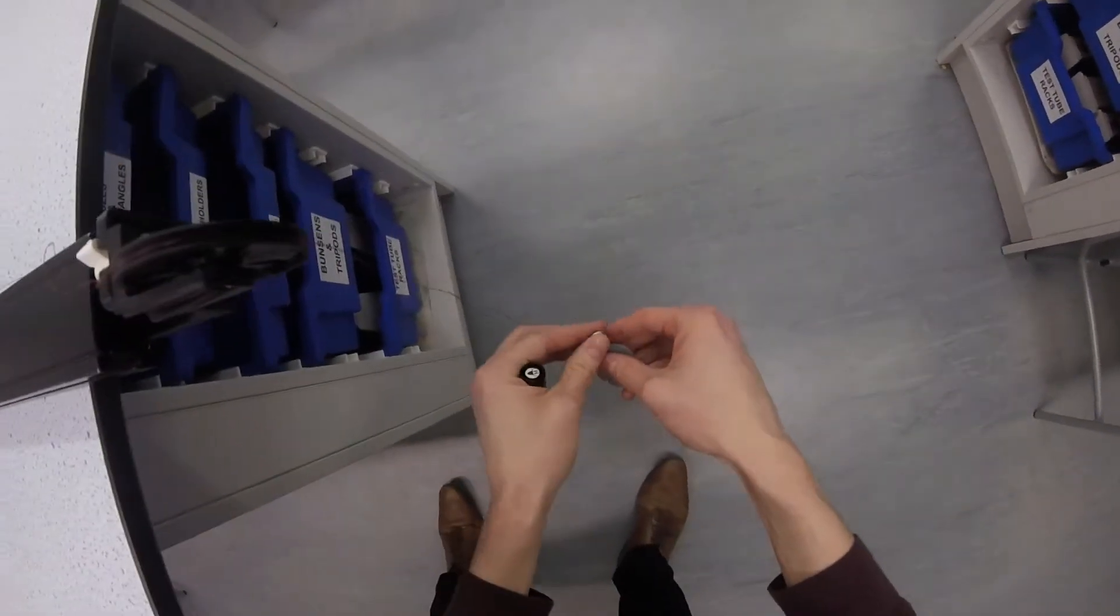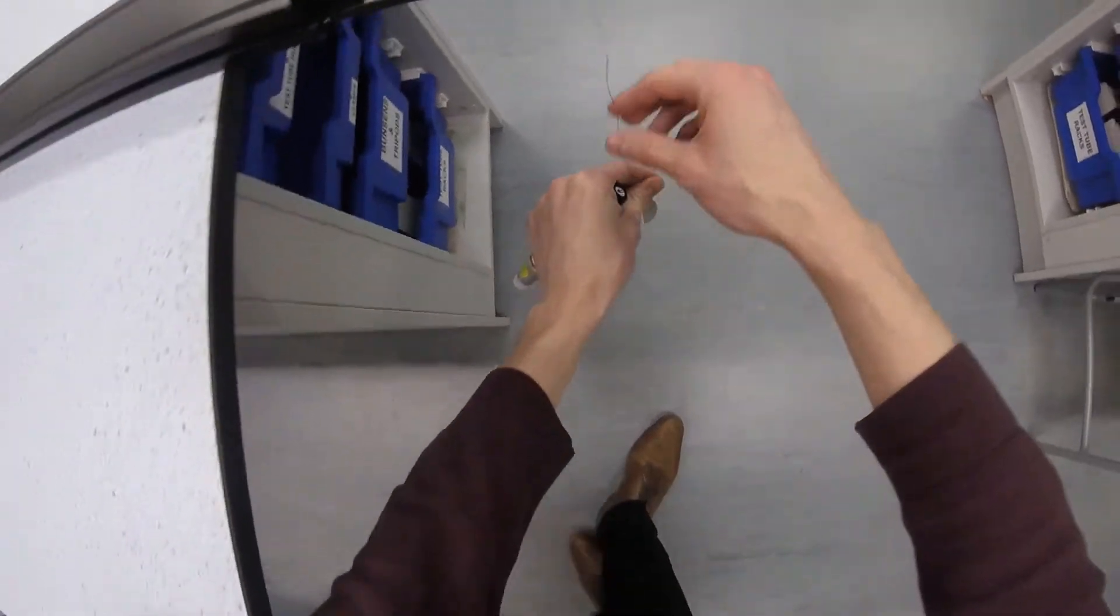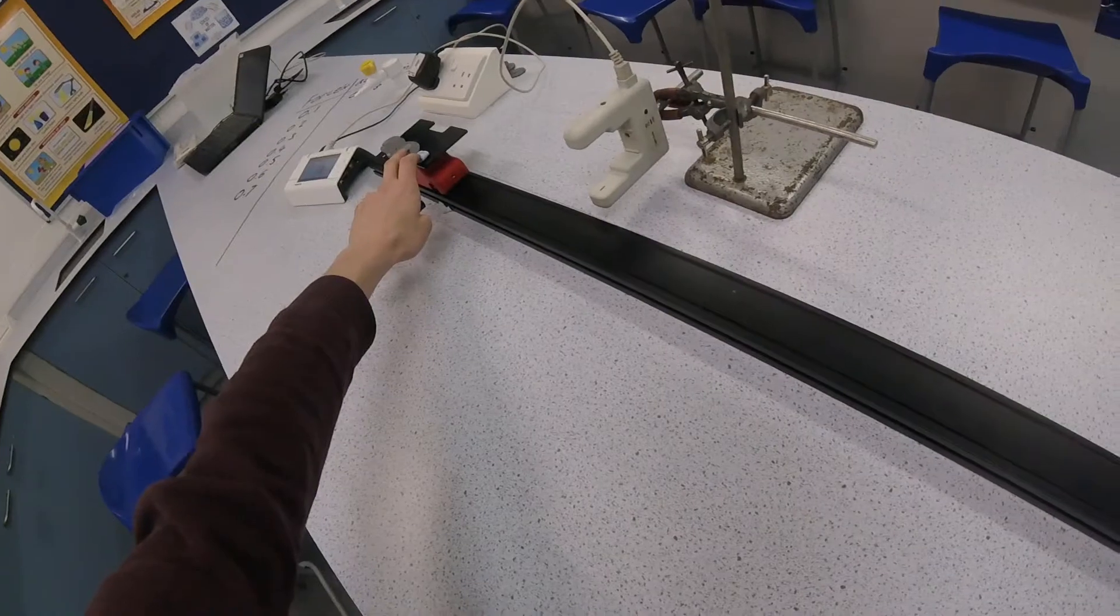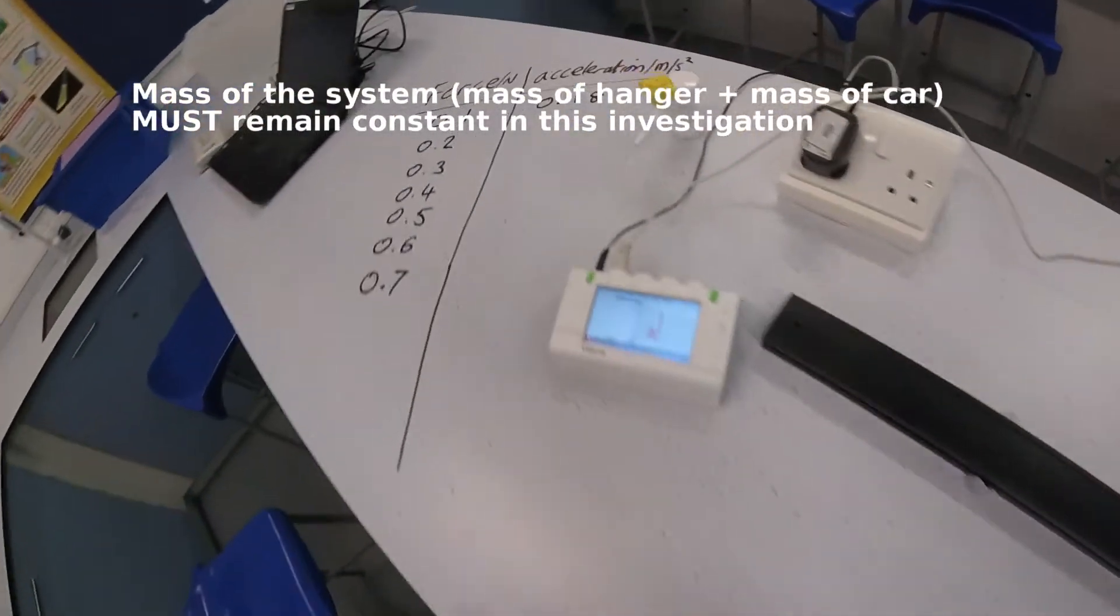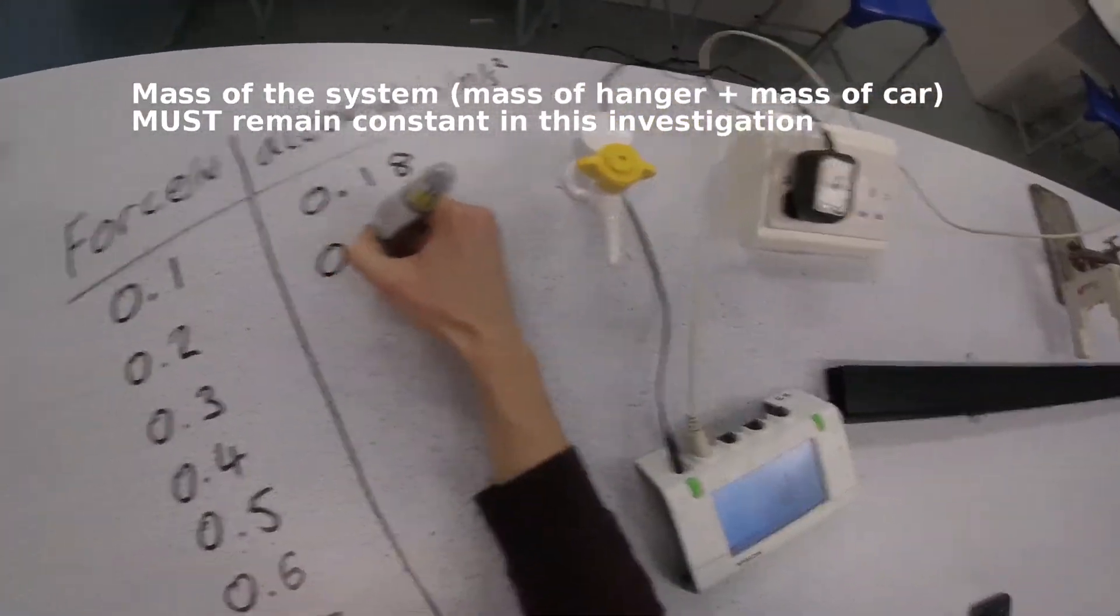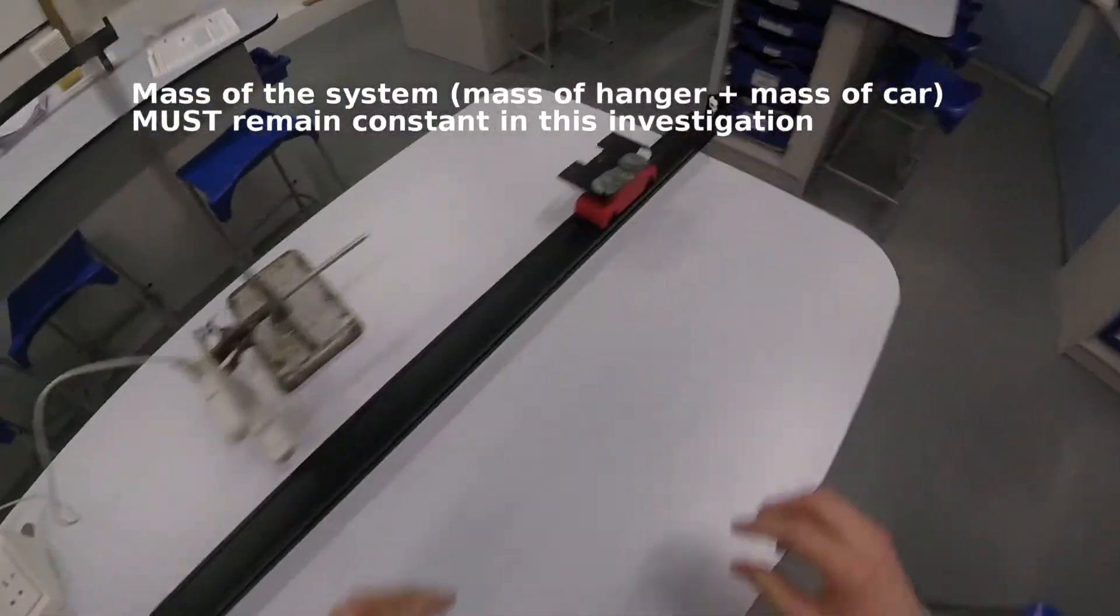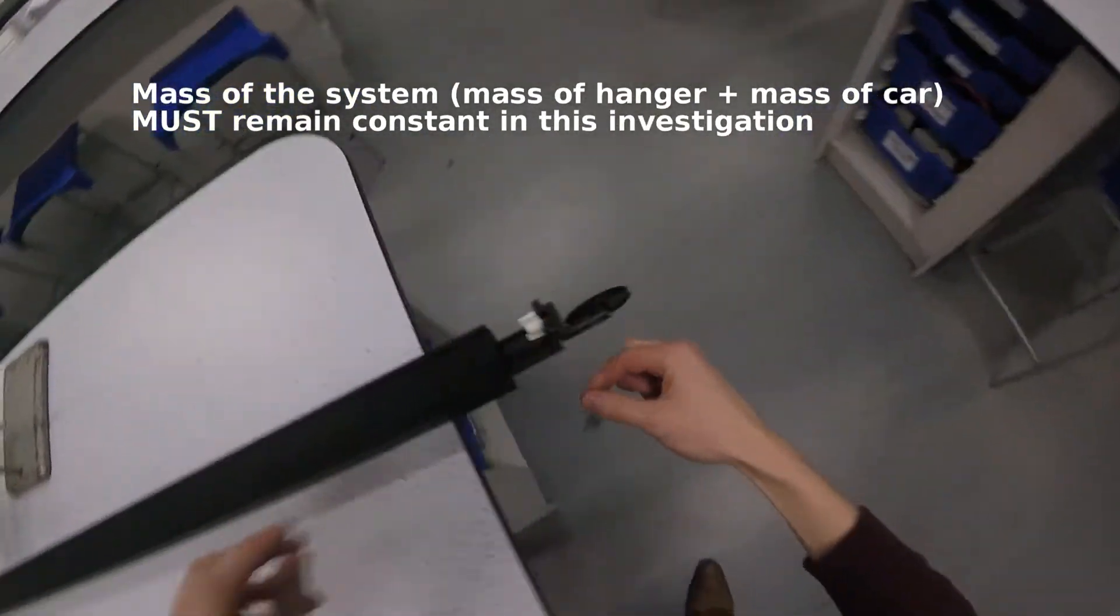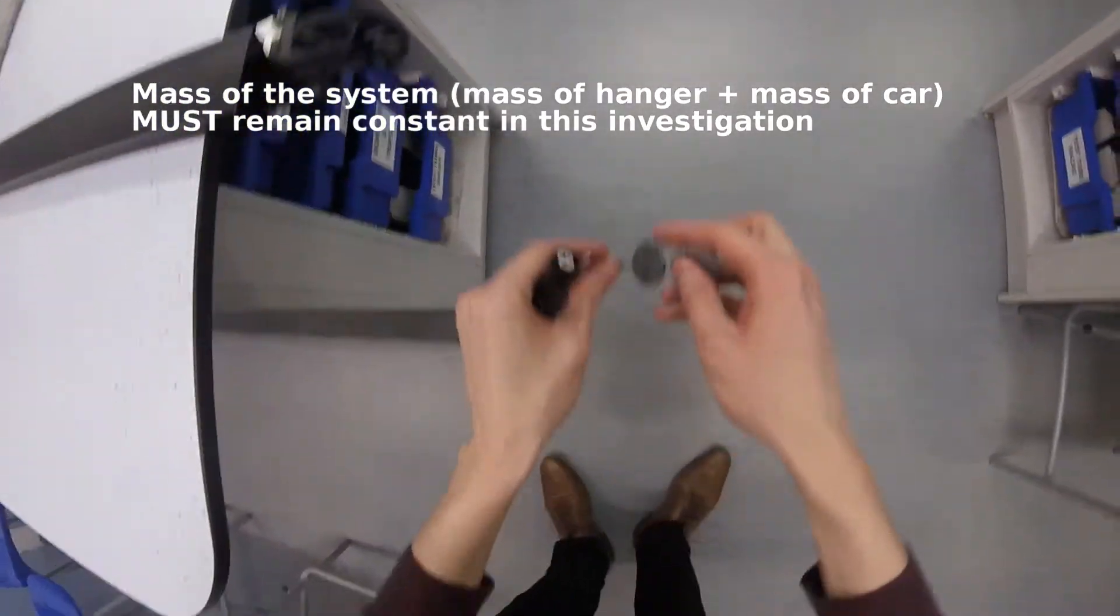Now notice something here - I took that slotted mass off the top of the car and I've put it on the end of the string. This investigation is very important that we keep the mass constant - the mass that's being accelerated. So I'm not adding any mass to the system. The car is being accelerated, but also that hanger at the end is also being accelerated. So I've got to take the masses off the car and put them onto the hanger in order to keep the mass of the entire system constant.